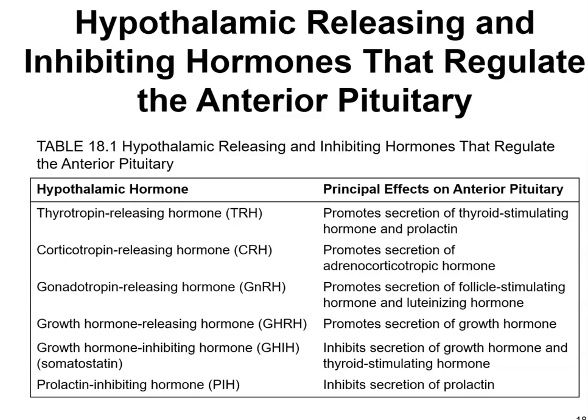Hypothalamic releasing and inhibiting hormones regulate the anterior pituitary. Thyrotropin-releasing hormone (TRH) promotes secretion of thyroid-stimulating hormone and prolactin. Corticotropin-releasing hormone (CRH) promotes secretion of adrenal corticotropin hormone. Gonadotropin-releasing hormone promotes secretion of follicle-stimulating hormone and luteinizing hormone. Growth hormone-releasing hormone promotes secretion of growth hormone, while growth hormone-inhibiting hormone inhibits its secretion along with thyroid-stimulating hormone. Prolactin-inhibiting hormone inhibits secretion of prolactin.